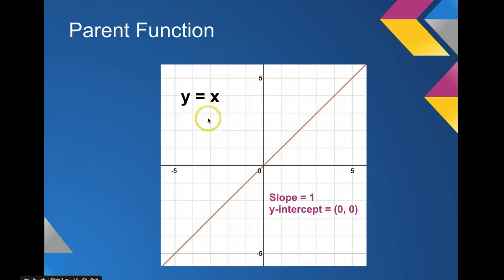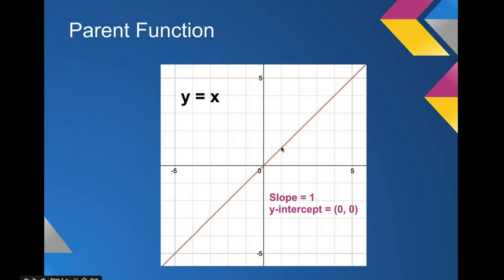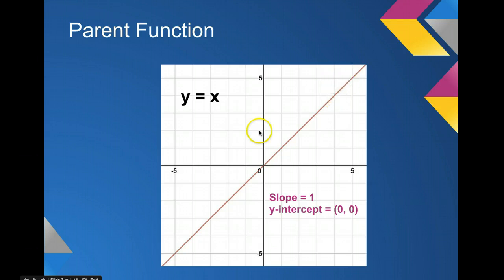Also in this parent function, there is no number in front of the x, which means it has a slope of 1, or 1 over 1. You can see that in the graph because it goes right through 0, 0. If I count up 1 and over 1, that's where my next point is — that's my slope. Remember, one of the characteristics of a linear equation is that the slope has a constant rate of change; it's always the same.